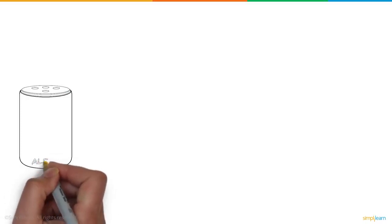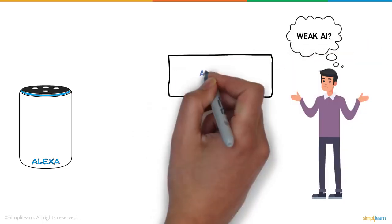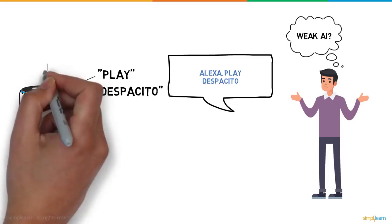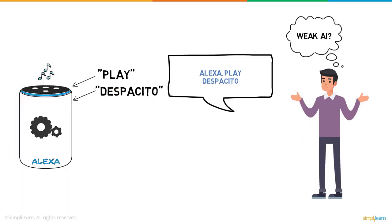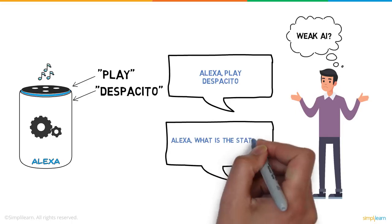You might say Alexa is definitely not a weak AI, since it can perform multiple tasks. Well, that's not really true. When you ask Alexa to play Despacito, it picks up the keywords play and Despacito and runs a program it is trained to. Alexa cannot respond to a question it isn't trained to answer. For instance,